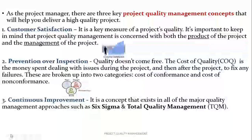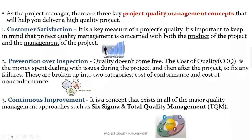The last is continuous improvement. It is a concept that exists in all of the major quality management approaches such as Six Sigma and total quality management. In fact, it is a key aspect of the concept of prevention over inspection. Continuous improvement includes plan, do, check, and act — these are all the actions performed during improvement.